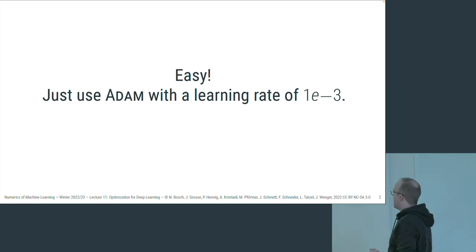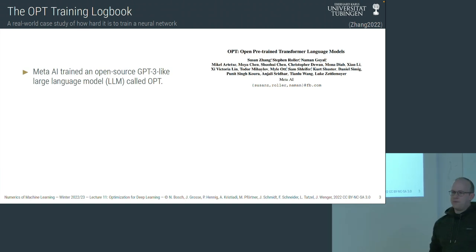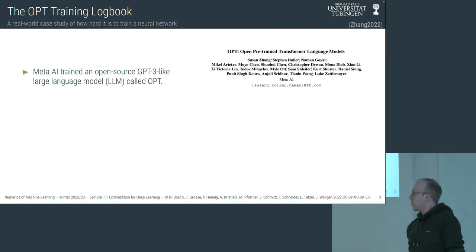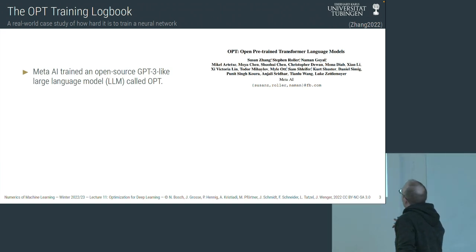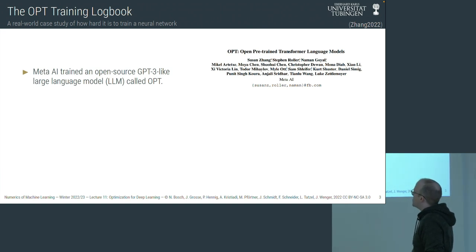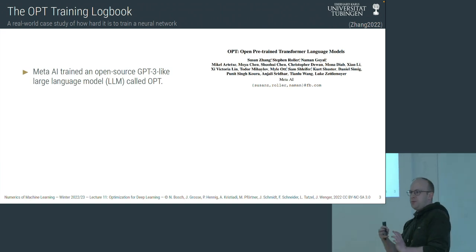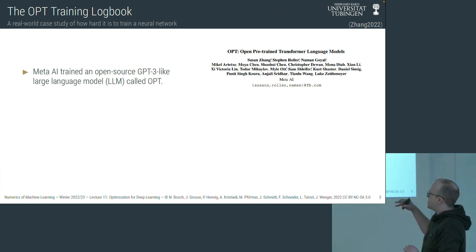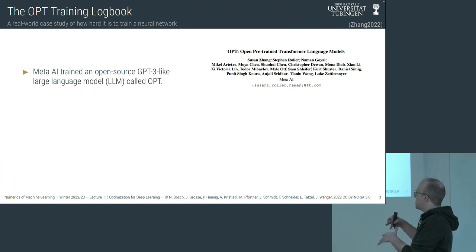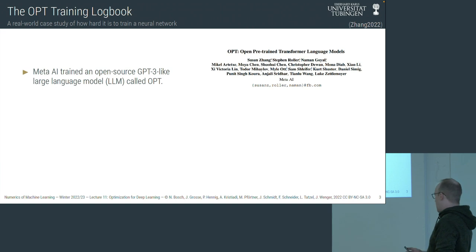If we look at a real-world example of people training a neural network, the story is a bit more complicated. Last year, an entire group at Meta AI tried to train a large language model — something similar to GPT-3 in architecture. GPT-3 is behind the big hype of ChatGPT. Meta tried to train a similar large language model, which they called OPT.